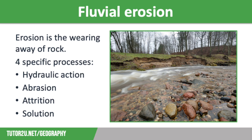And finally we have solution. This is where carbon dioxide in the atmosphere dissolves in the river to form a weak acid. As the water flows through the channel it will react with the rocks in the riverbanks and bed, causing them to dissolve — particularly chalk and limestone. Remember that these are the same as the coastal erosion processes, so they should be easy to remember.